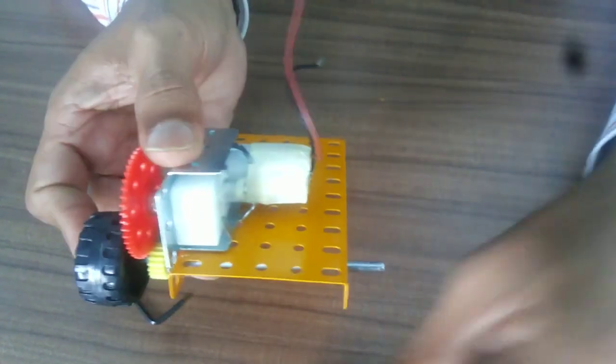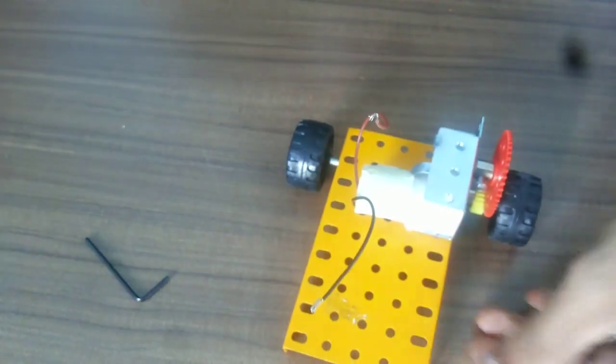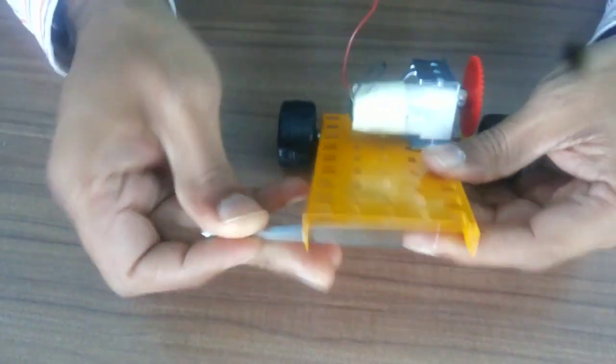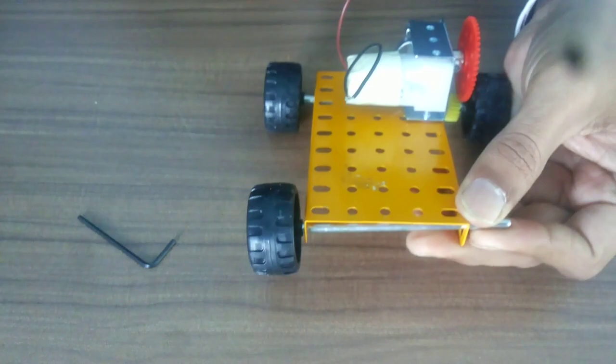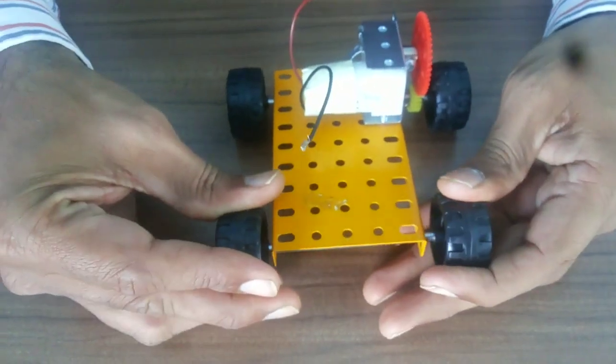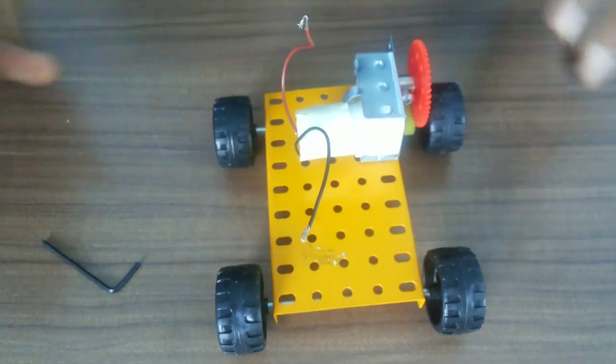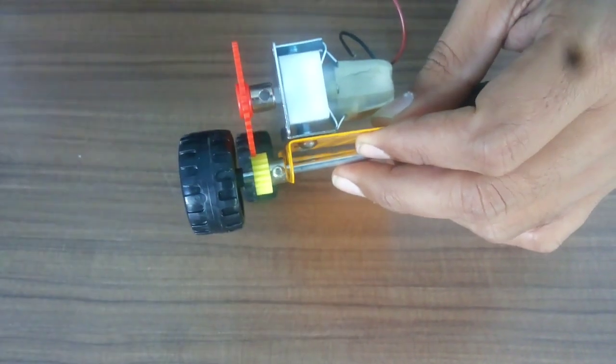Similarly, from the other side connect this wheel with a rod and then insert this small rod from the 2 holes and put these 2 wheels from either side like this. This is your car ready. Make sure that the drive is given to the rear wheel.